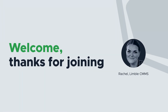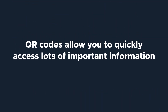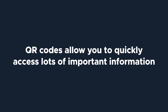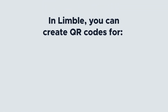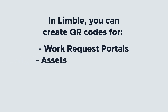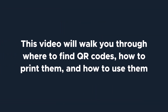Hi everyone, I'm Rachel with Limble's product team. Today we're going to be talking about using QR codes in Limble. QR codes are one of the most loved features in Limble because they allow you to quickly access lots of important information. In Limble, you can create QR codes for work request portals, assets, parts, PMs, and work order templates. This video will walk you through where to find QR codes, how to print them, and how to use them.